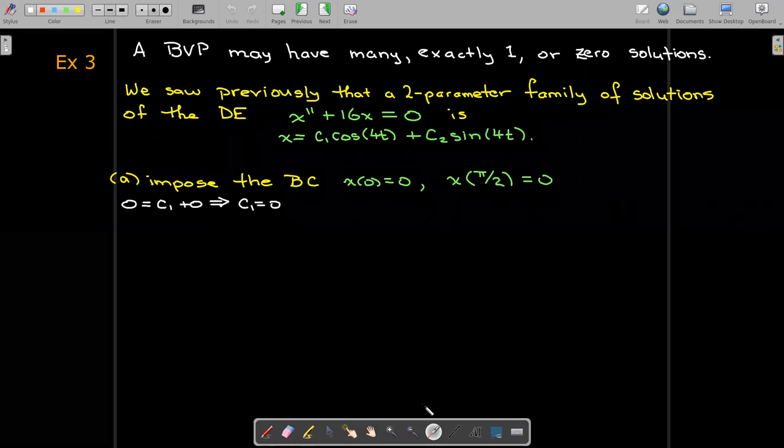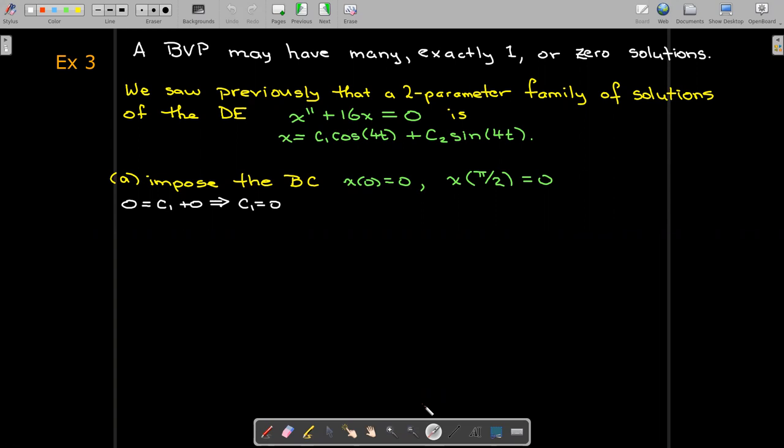And so if I put in the first boundary condition, remember cos(0) is 1 and sin(0) is 0. So that would leave me with c_1 equaling 0. Well, what about c_2? I'll need to use the other boundary condition.